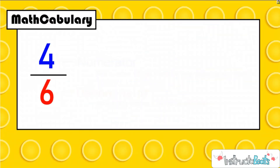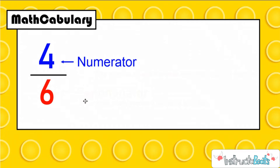Before we start building, we need to check out our mathcabulary that we've learned in previous lessons — this is integral, very important to our lesson today. When we write fractions, we have a top and bottom number split up by a line. We call the top number the numerator and the bottom number the denominator. D for down helps me remember that the denominator is down — it's the bottom of the fraction.